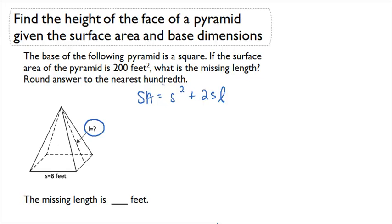If we plug in the information that we know, we can solve for L. The surface area, 200 square feet, equals 8 squared plus 2 times 8 times L.